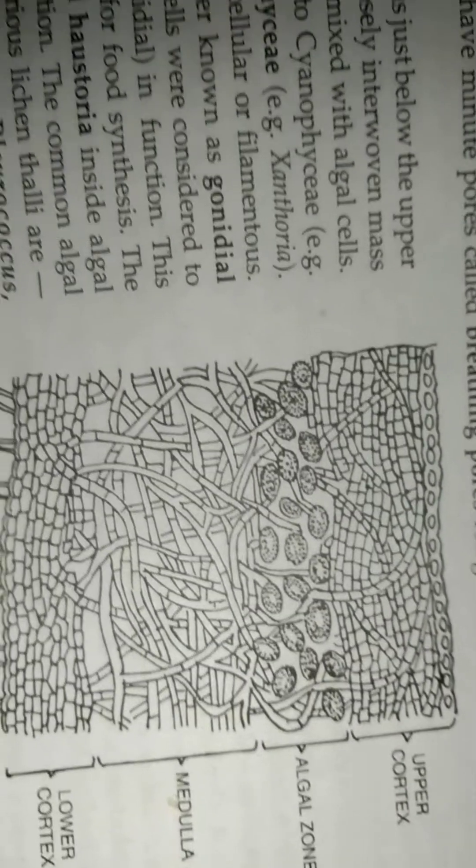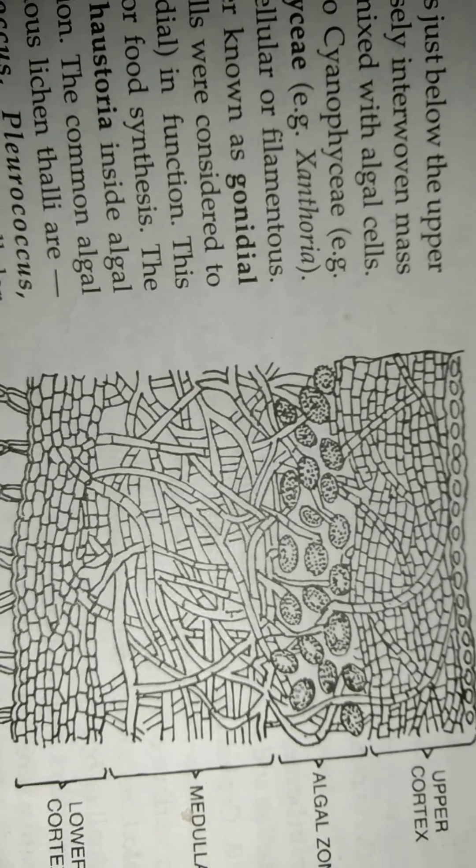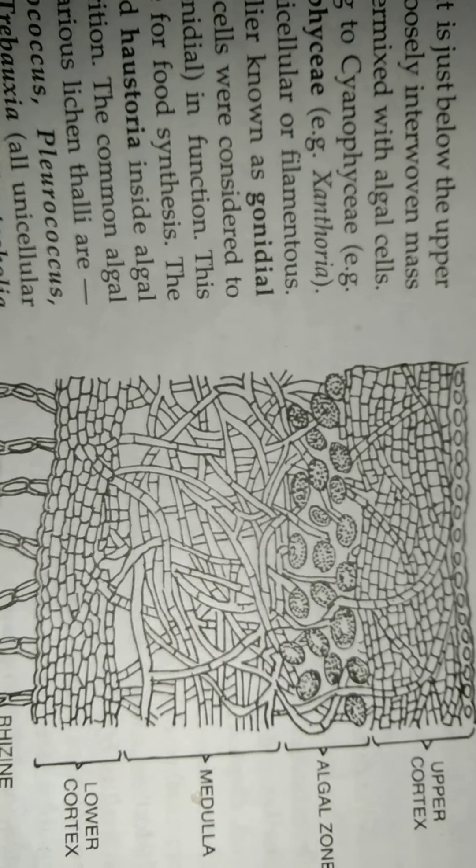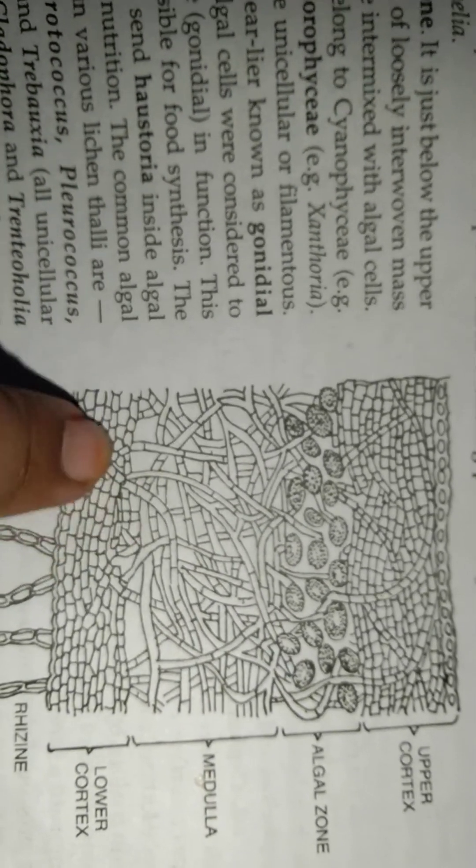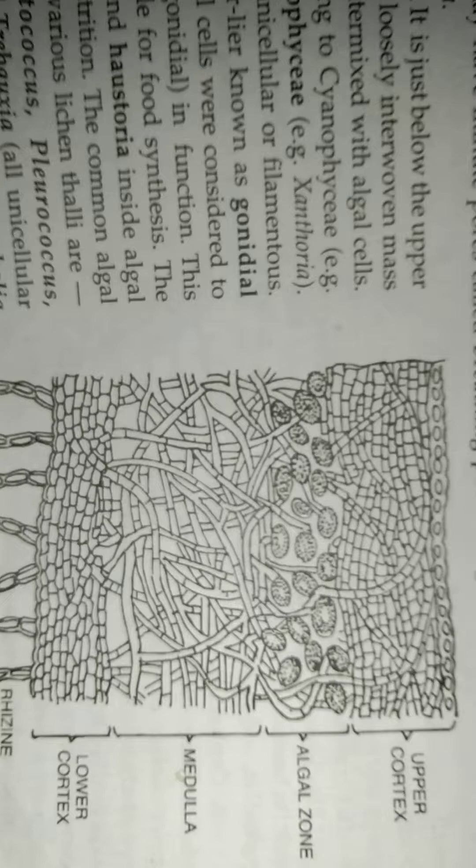Hyphae are scattered and running in all directions, giving out the anastomosing strands which is in the upper and lower cortex zone. This cortex, lower cortex, and upper cortex. This is medulla.